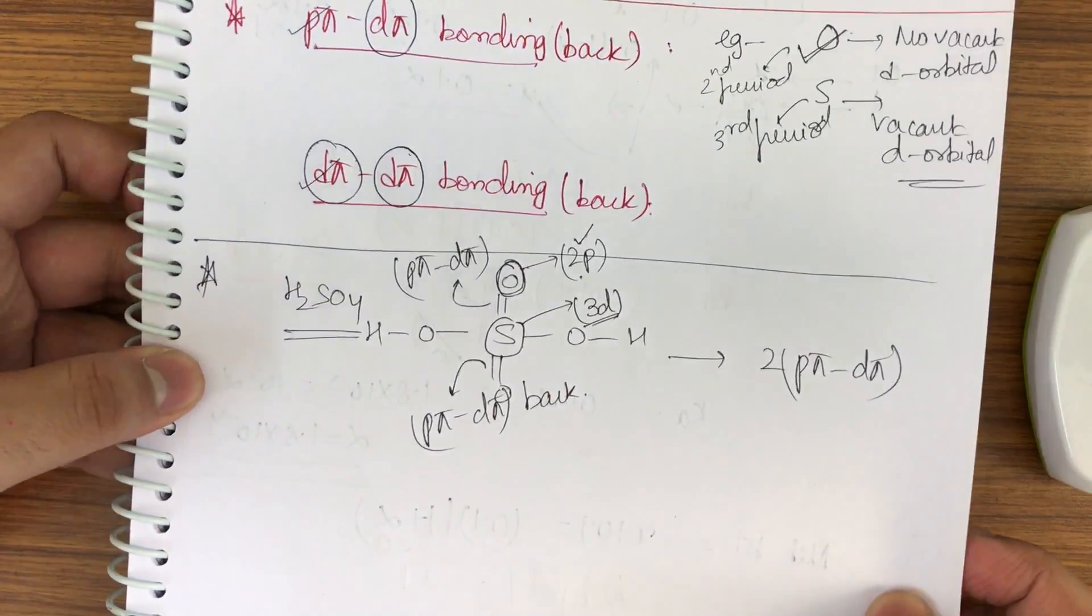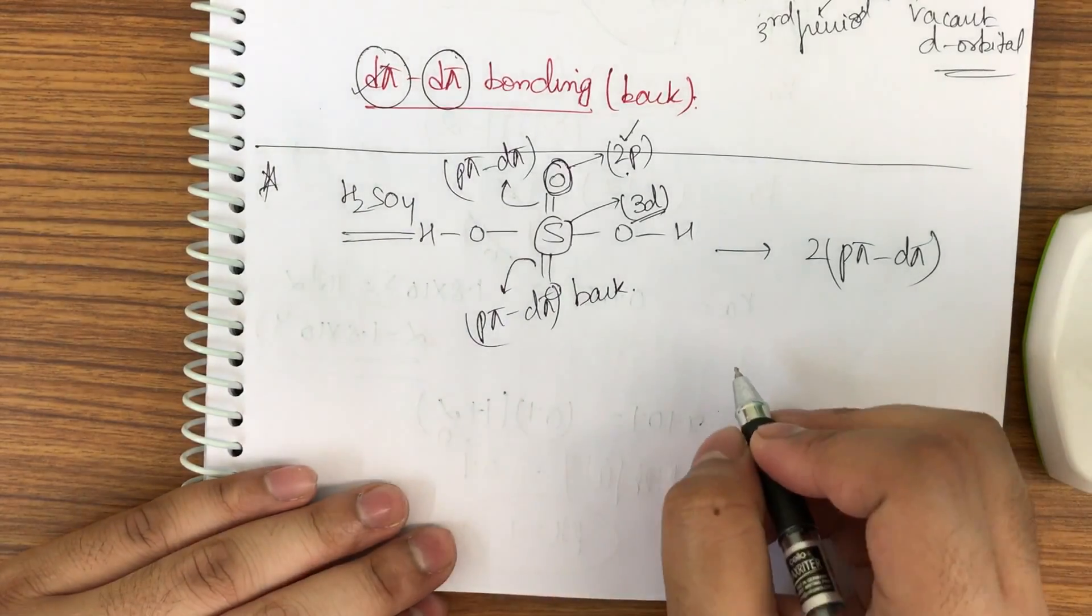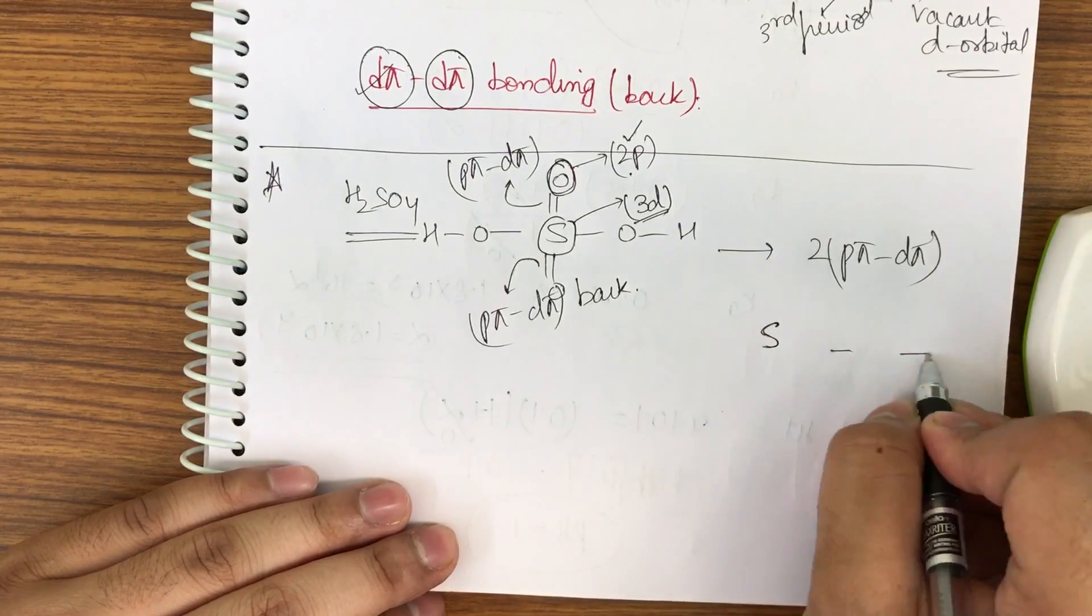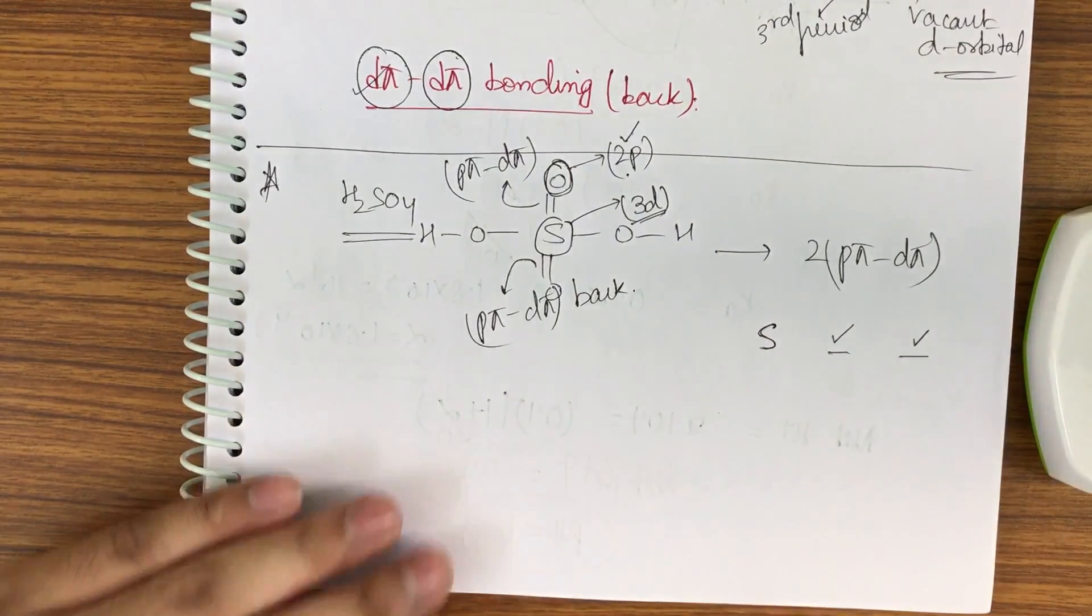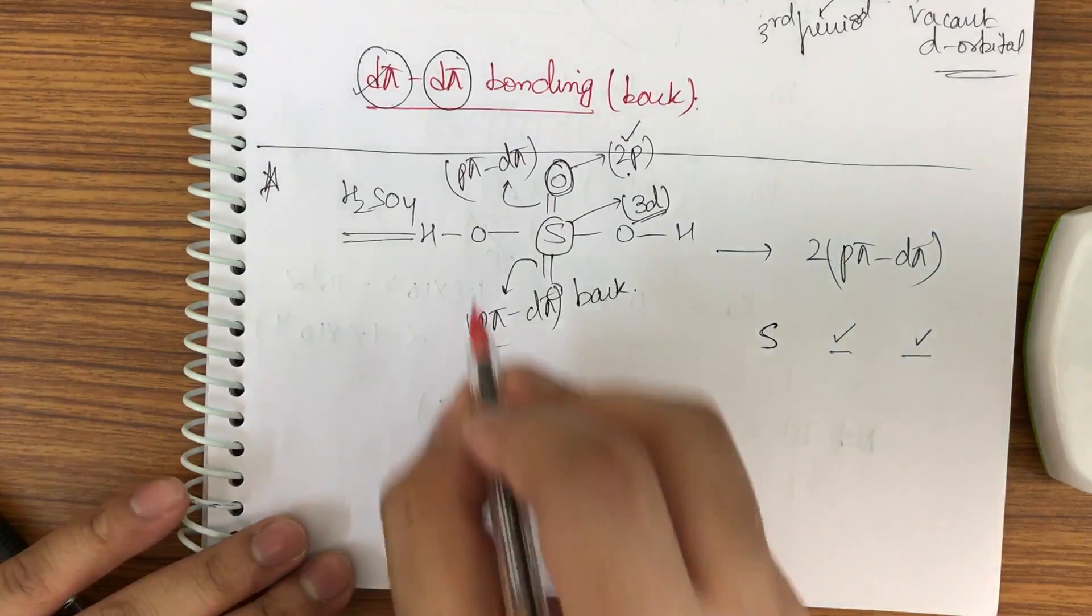So if a question is asked how a coordinate bond is formed between these two, the basic trick that can be applied is: in the periodic table sulfur comes, then it has to get two electrons for getting the noble gas configuration. We supply the electrons by the pi bond.